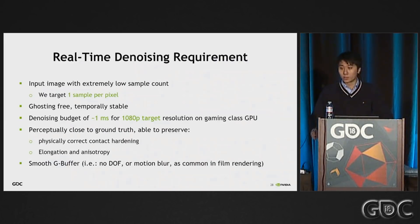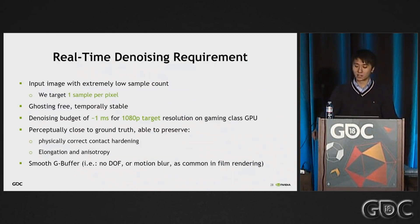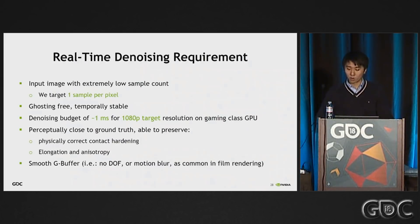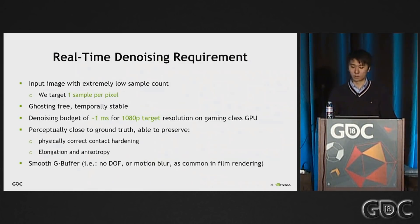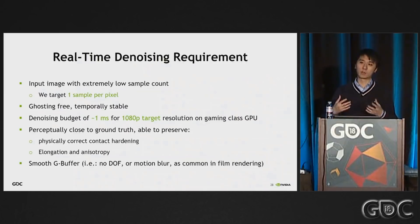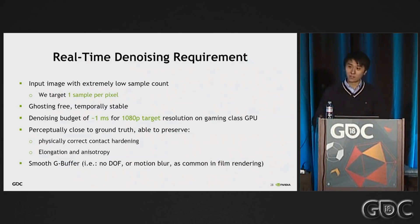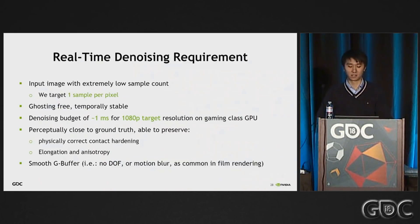For quality, it's not realistic to achieve the same level as offline denoisers given our sample count and budget. However, we still want results to be as perceptually close to ground truth as possible, especially preserving expected shading features — for example, contact hardening for soft shadows, and elongation when looking from the grazing angle for glossy reflections. Thankfully, we don't have to deal with noise in the G-buffer since depth of field and motion blur are always done in post-processing in games.